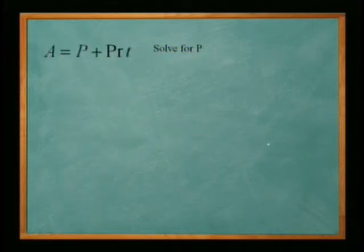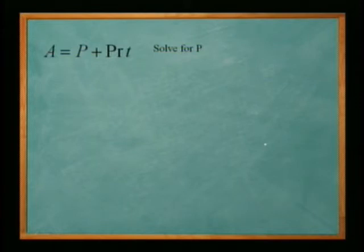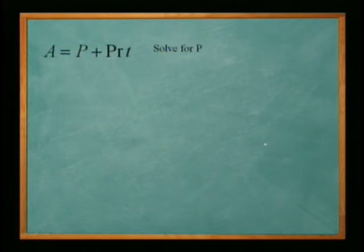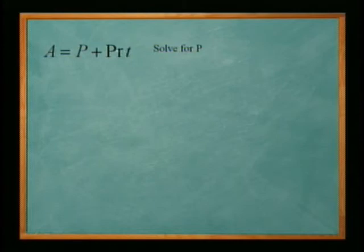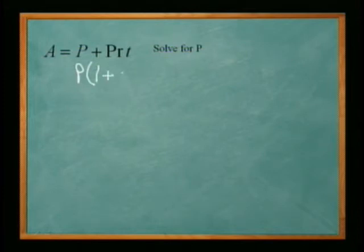Let's take a look at another one. Here we have a equals p plus prt, and we want to solve for p. When you want to solve for a single variable, you need to have only one of those variables in the equation. Here we have two p's — the standalone p and the p that's part of prt. So we need to figure out a way to get just one p. What you can do is factor out the p, giving you p times the quantity 1 plus rt.